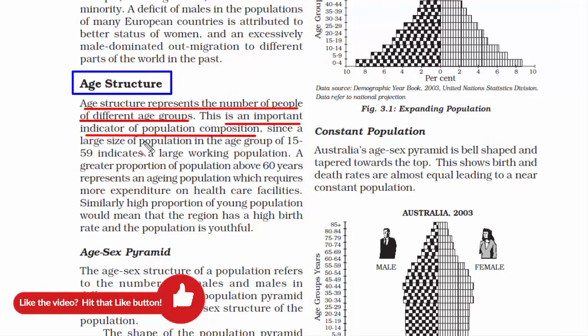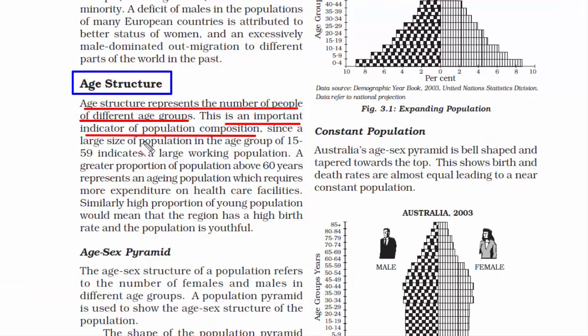Similarly, a high proportion of young population would mean that the region has a high birth rate and the population is youthful. Therefore, more schemes can be developed for this category. This is how age structure plays an important role, enabling us to understand and compare data, which then provides insights for better decision making.